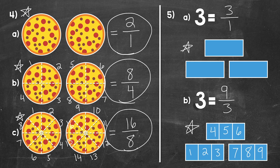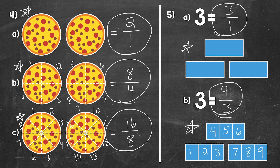Nine over three — nine thirds — is our fraction. Nine thirds is equal to three. Both of these fractions are equivalent; they're both equal to three.